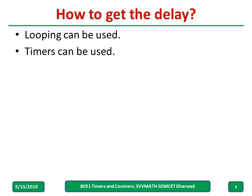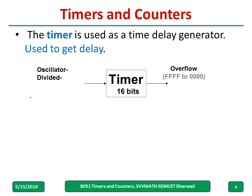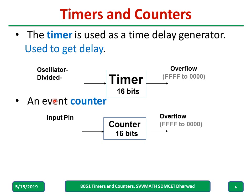Looping can be used to get a delay, and timers can also be used to get a delay — for example, incrementing after one second or after one minute. The timer is used as a time delay generator, taking input from the oscillator as a 16-bit timer. It can also function as an event counter, where a sensor output is given as an input pin to the 8051 microcontroller and it will count.